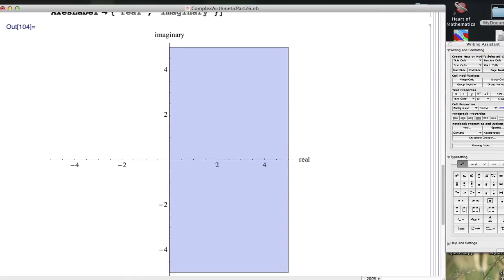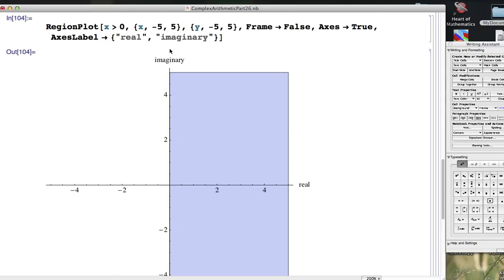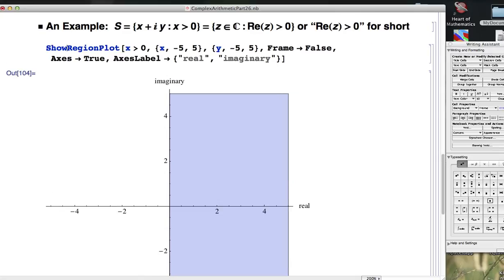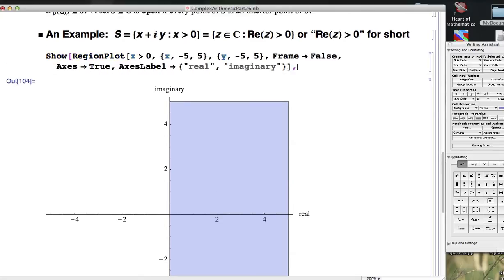So this plots the right half plane. You need to look at this picture and imagine it going on to the right forever, and up here forever, and down here forever, but it does cut off along the imaginary axis where x is zero. The real part is zero.